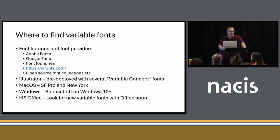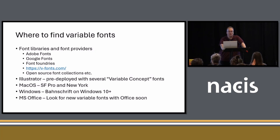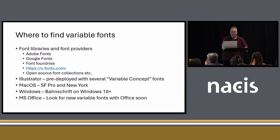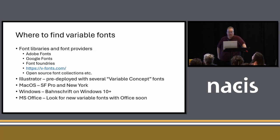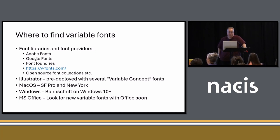Where to find variable fonts? Increasingly you'll see them in all of our font libraries — Adobe Fonts, Google Fonts. Font foundries are producing more and more variable fonts. I like to go to v-fonts.com, which has over 350 variable fonts you can actually interact with. There's also a growing open source font world, and more and more of the open source fonts are variable. Adobe Illustrator comes pre-deployed with several fonts, though Adobe calls them all 'concepts.' If you're using a Mac, SF Pro and New York have variable versions, and all supported versions of Windows include Bonschrift, which was deployed in Windows 10.